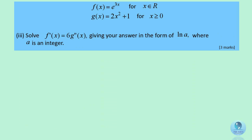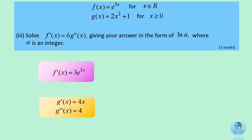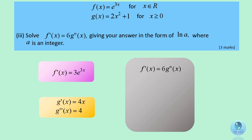To answer these questions, get the derivative for both functions. Differentiate f to get the first derivative. Differentiate g twice to get the second derivative. For the first derivative of f equals 6 times the second derivative of g, you get 3e to the power of 3x equals 6 multiplied by 4. So e to the power of 3x equals 24, and x equals 1 over 3 times the natural log of 8, which equals the natural log of 2.